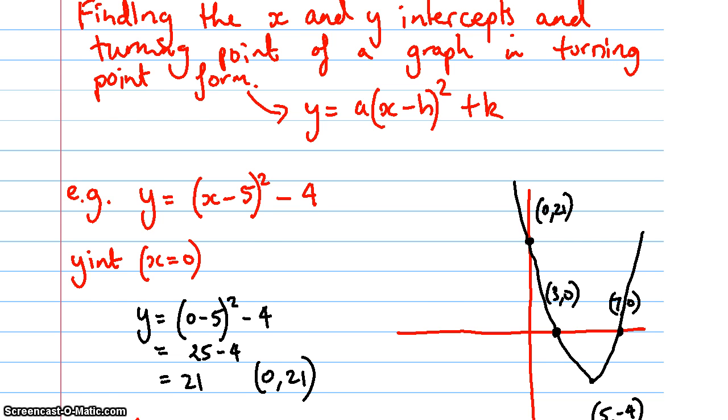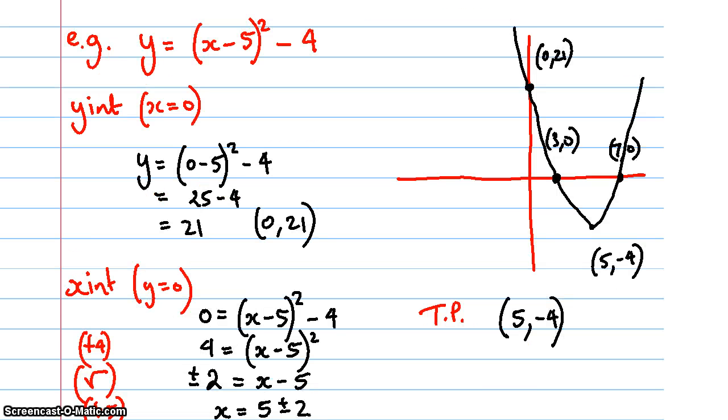Now I need to find the x-intercepts and again I make y equals zero and I get (x - 5)² - 4 = 0. Now there's a variety of ways of going about this. One way that you could do it is you could actually bring that negative four into the bracket like a difference of two squares. I might just do that one down here: (x - 5 + 2)(x - 5 - 2) and then sort of go from there.